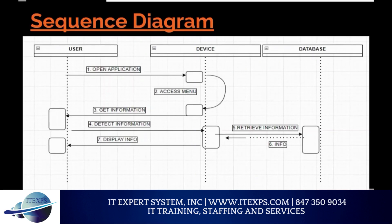A sequence diagram is a model of the interaction between objects. It shows us interaction between objects in a sequential order. What we see is the interaction between user, device, and database. We open the application, we access the menu, and the device gives us information. We detect the information, the database retrieves it, gives us info back, and displays the information.